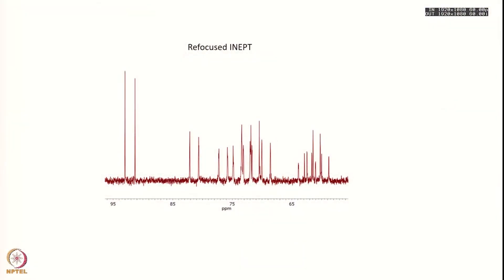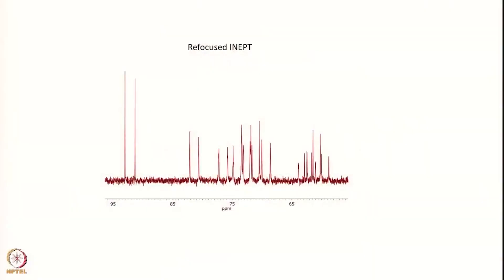And here is a practical example of such a spectrum — you can see all in-phase lines with much higher signal-to-noise ratios, and all multiplet structures are retained, so there are no problems with missing peaks. This is the ideal technique one can use, and most of the time this is what is used in all multidimensional NMR experiments. I think we will stop here with the polarization transfer.